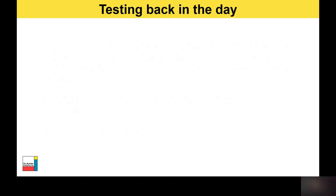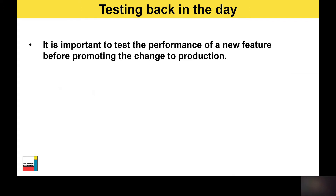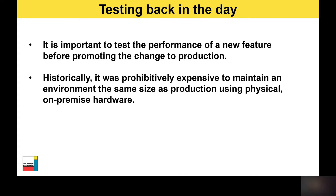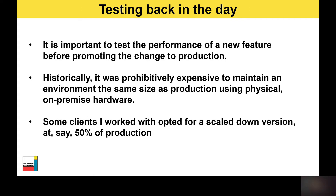So how did it go back in the day? It's important to test the performance of any new feature before putting that change into production. Historically it was really expensive to maintain an on-premise environment the same size as production using physical hardware and software, so some clients decided to opt for a scaled-down version at say half the size of production. This allowed the client to execute the same workloads on both production and the scaled-down environment. Having the same size hardware in production and test end-to-end was really a big luxury for most clients.